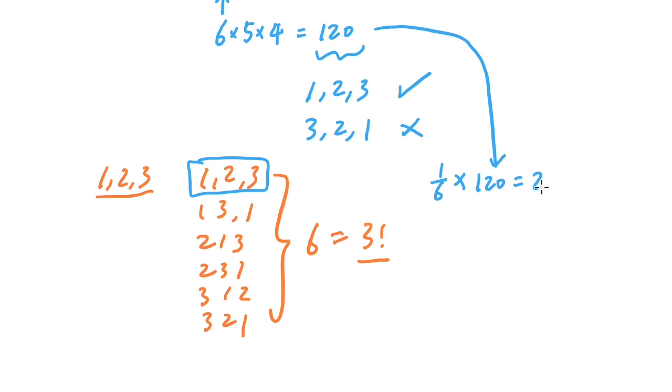So with the 120 sequences, only one-sixth of them, which is 20 of these sequences, are actually in strictly increasing order. So that gives us 20.